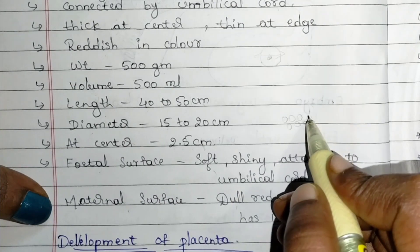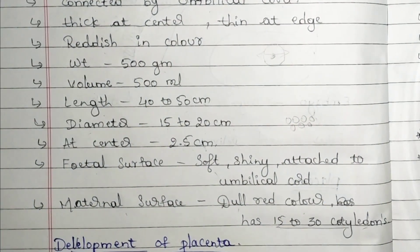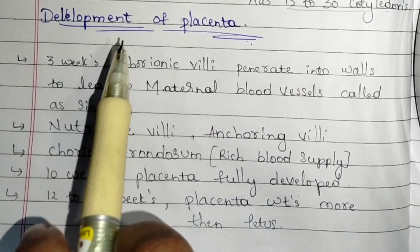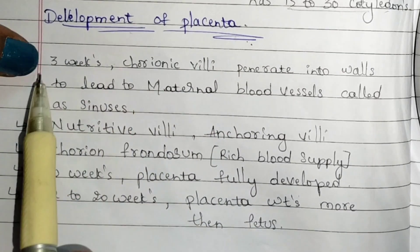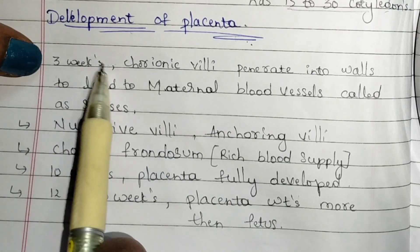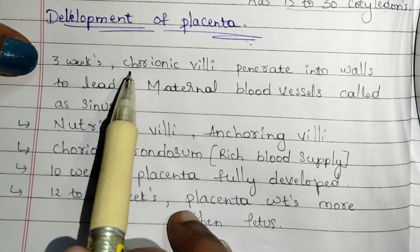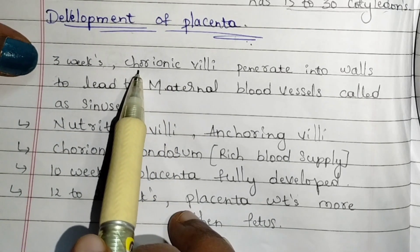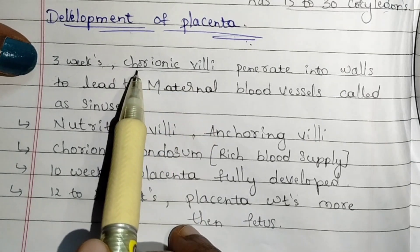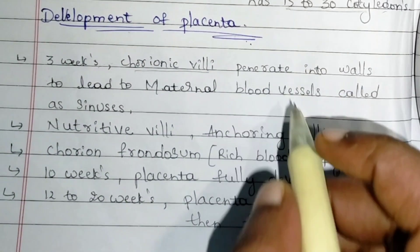The placenta has 15 to 30 cotyledons. Development of placenta: placenta starts developing at the third week after fertilization. The very first villus that develops in the placenta is the chorionic villus.